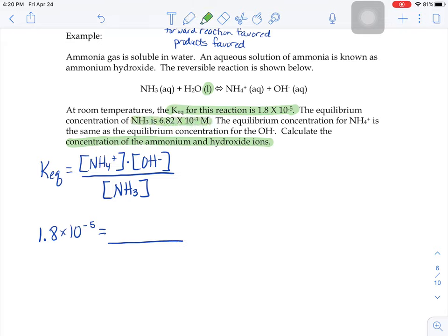Finally, now we have to solve for the concentration of the ammonium and the hydroxide ions. It does tell us in this sentence that the equilibrium concentrations for the ammonium is the same as the equilibrium concentration for the hydroxide. So we don't know what the concentration of the ammonium is, but we do know that whatever it is, it's the same number as the hydroxide. So let's call that ammonium X, and that means the hydroxide is also X.